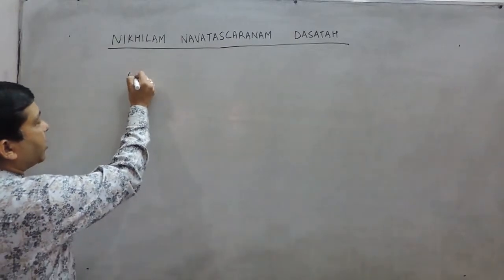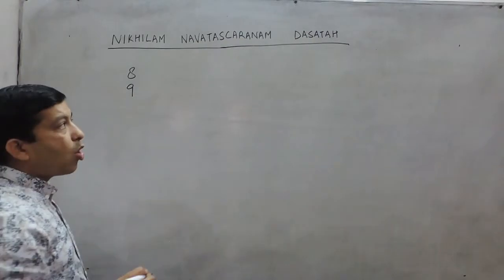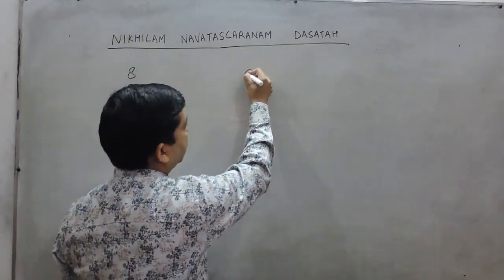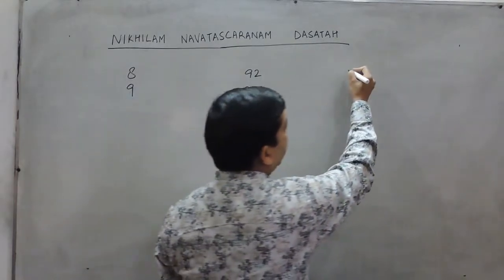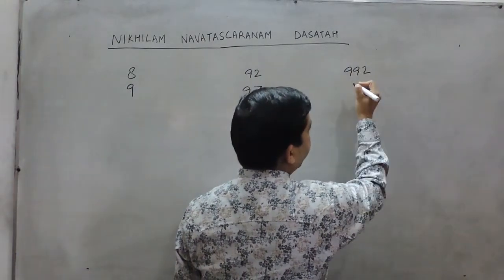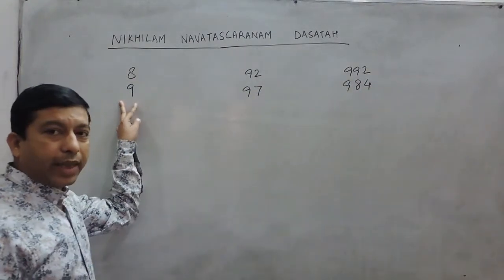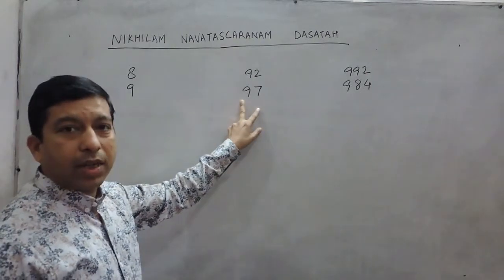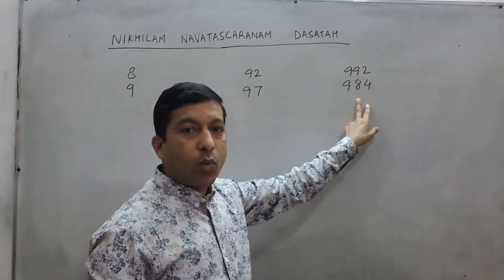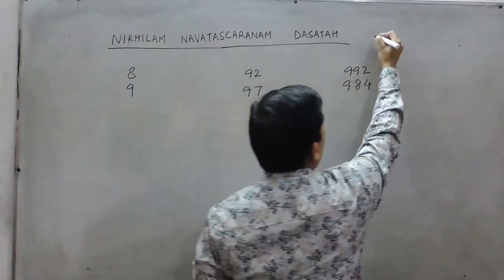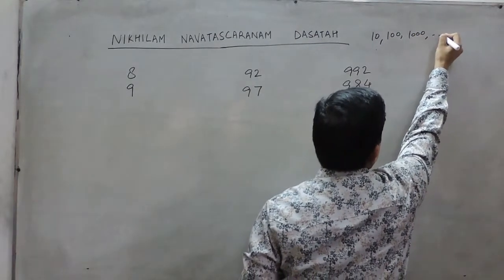For example, if we talk about two numbers like 8 and 9, or two numbers like 92 and 97, or two numbers like 992 and 984. These are two numbers near to 10, these are two numbers near to 100, and these are two numbers near to 1000. So we are talking about numbers near to 10, near to 100, near to 1000, and so on.